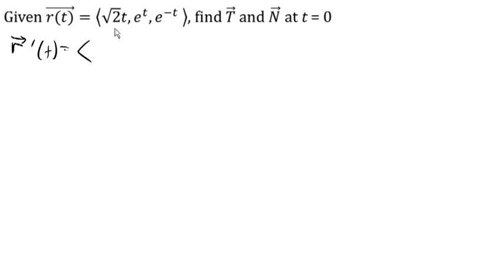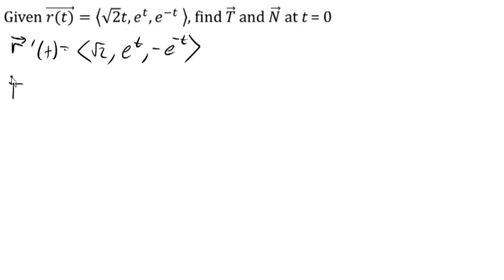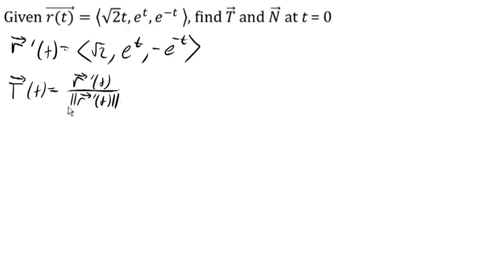So taking the derivative of this, we get root 2, e to the t, and using the chain rule, negative e to the negative t. Now in order to find the unit tangent vector, we're going to need to take the tangent vector and divide it by the magnitude of the tangent vector to make a unit vector.